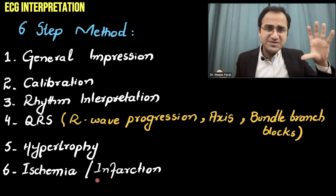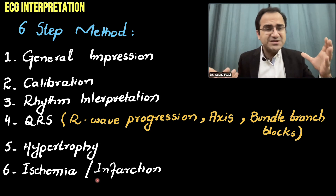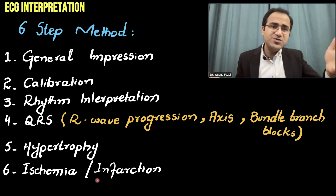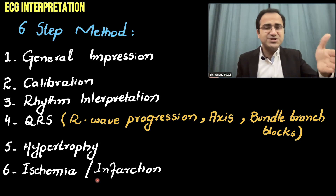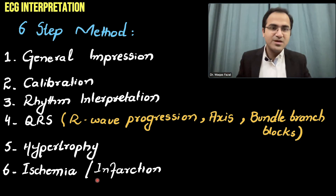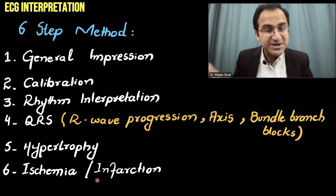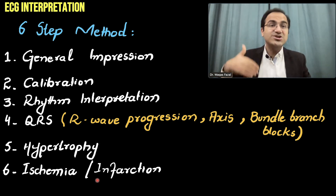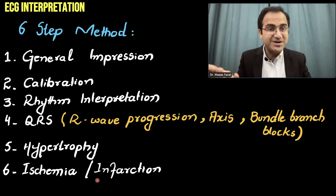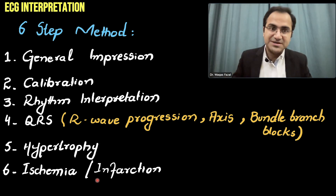In words, if there is an emergency, you cannot do all 6 steps. What you do is look at the general impression, see the ST segment elevations, and quickly treat the patient. But in exams, if they want a detailed interpretation of the ECG, or if you have the time, you follow the 6-step method.